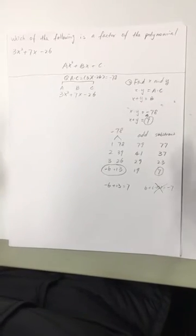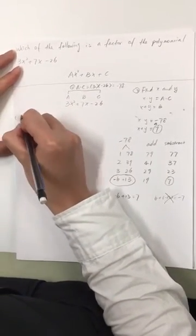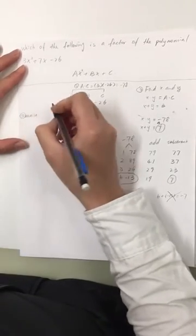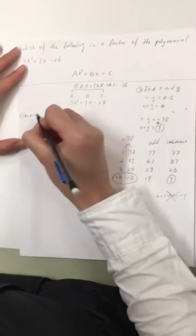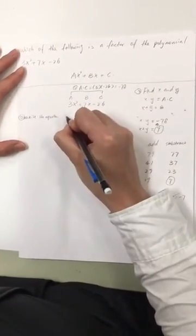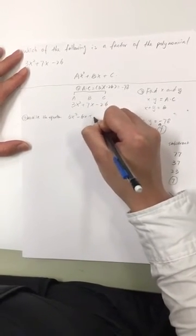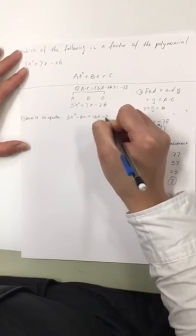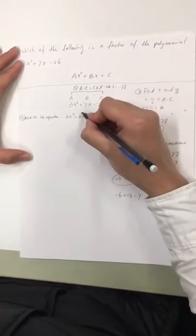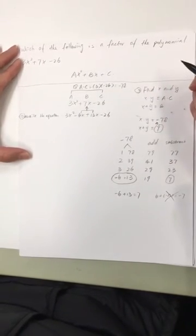After we find the numbers, we need to rewrite the equation. 3x squared minus 6x plus 13x minus 26. So actually, these two terms is 7x.